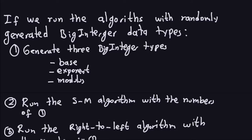Hello and welcome again. In the previous video we were talking about the comparison between the square-multiply algorithm and the right-to-left binary modular exponentiation. These are two algorithms to do exactly the same thing — compute modular exponentiation. In the last video I compared them by setting the base, the exponent, and the modulus as large integers and then running the algorithms 200 times and comparing the times in my Java implementation. So in this video I'm going to tell you what I did the second time I compared these two algorithms.